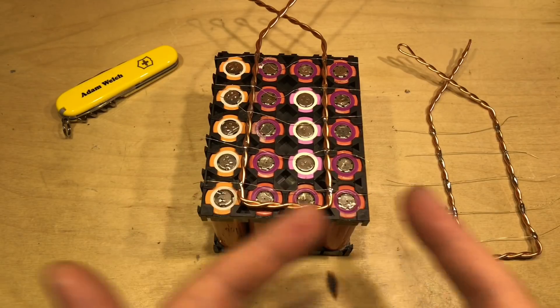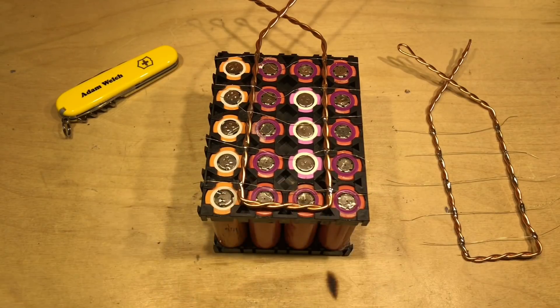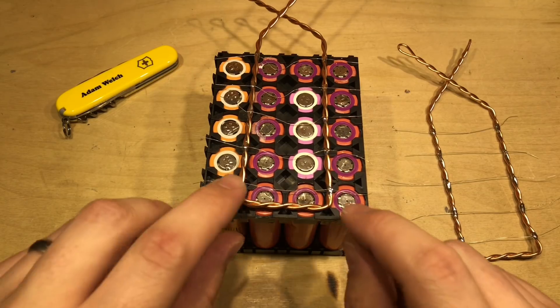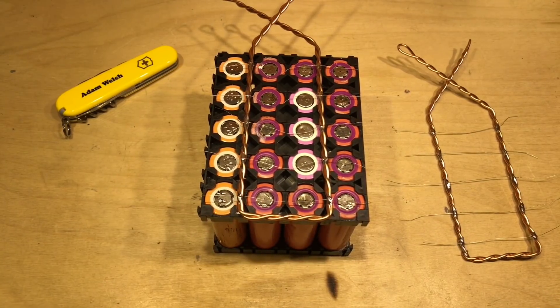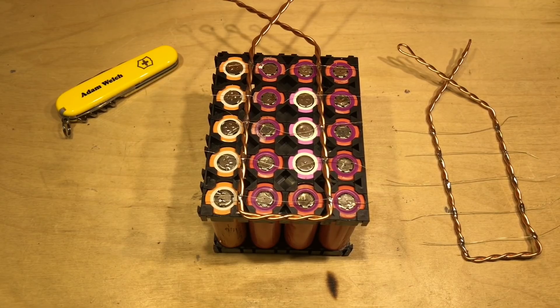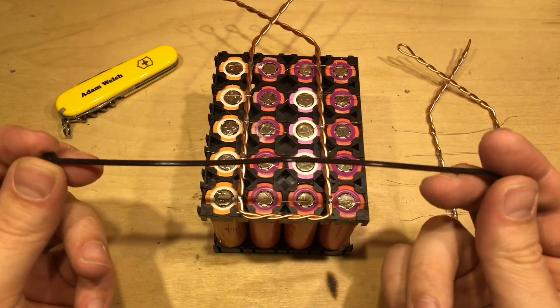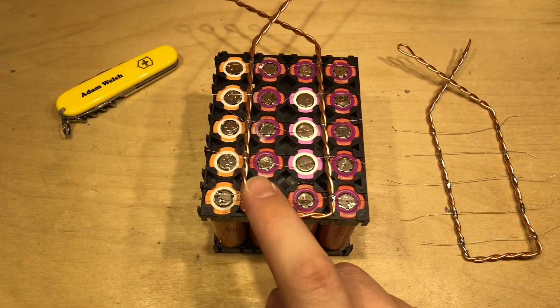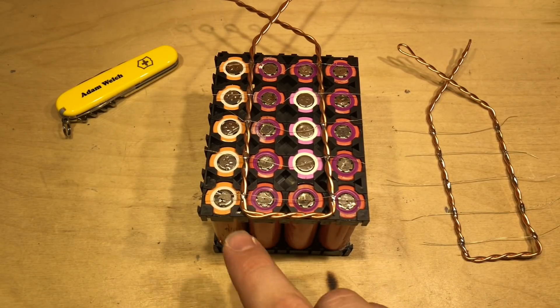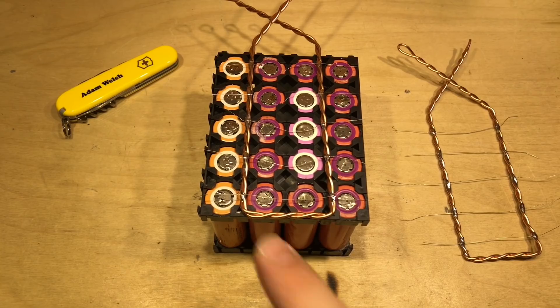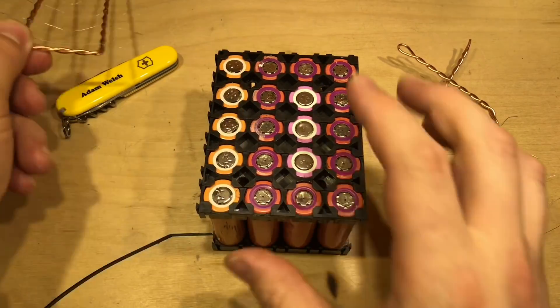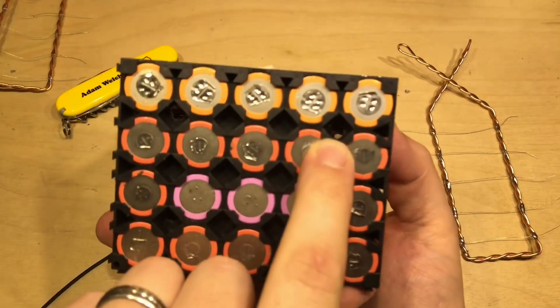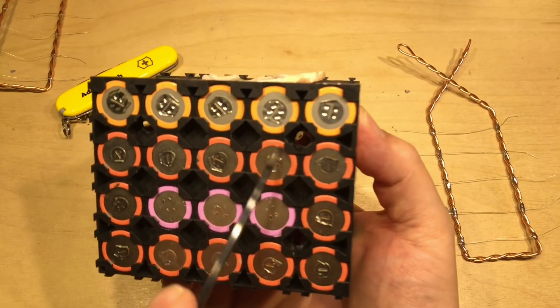So now I have two bus bars completed with their fuses already soldered on and this next bit is the bit that I found the most annoying of the process. I've decided to use zip ties or cable ties to not only hold the bus bars on but actually hold the whole pack together.